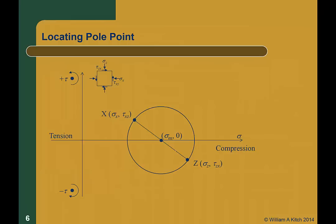Here is the Mohr's circle we just constructed. The point x on the Mohr's circle represents stresses acting on the x-plane, and the point z represents stresses acting on the z-plane. If we start at x and draw a line parallel to the plane on which those stresses act — that is a vertical line — it will intersect the circle at a specific point. Likewise, if we start at z and draw a line parallel to the surface on which the z stresses act — that is a horizontal line — it will intersect the circle at the same point. That point is the pole point or the origin of planes. Any line drawn from point P will intersect the circle at a point representing the shear and normal stresses on a plane parallel to that line.